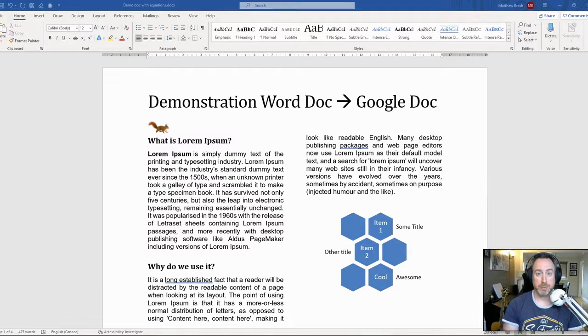I've been told a few times by different people that converting a Word document to a Google document can get really messy and that it doesn't work properly and it screws everything up. I just want to see, I'm going to run a demonstration here totally from scratch and we're going to see how it does.